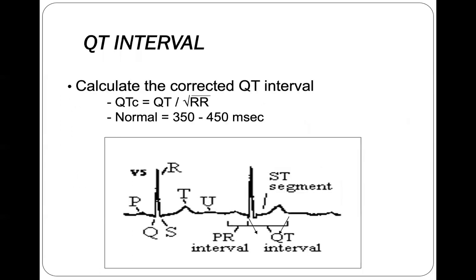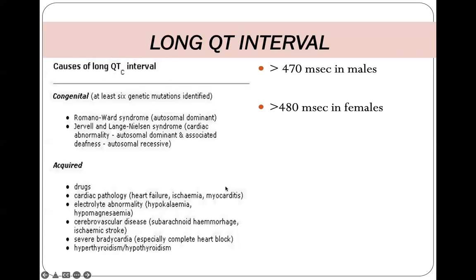Because the QT interval is affected by heart rate, it is not measured simply by calculating the raw duration. We have to correct it for heart rate, so we calculate what is called the corrected QT interval — QTc — which equals the QT interval divided by the square root of the RR interval.